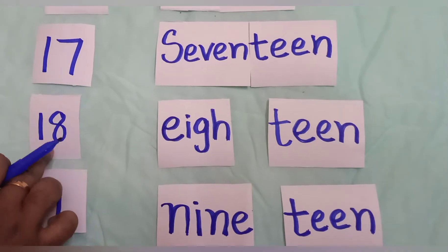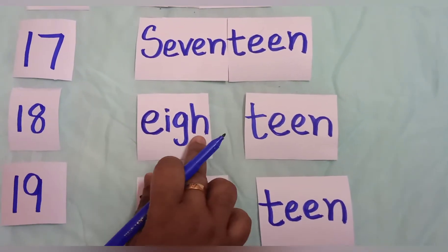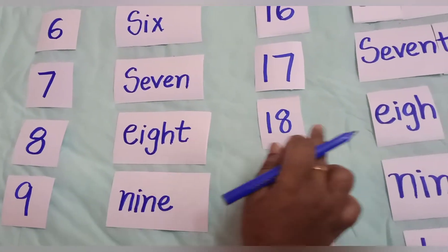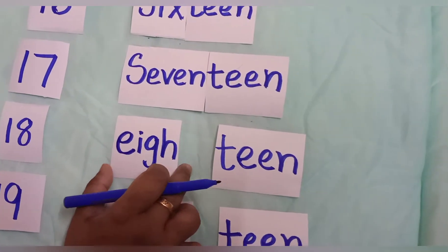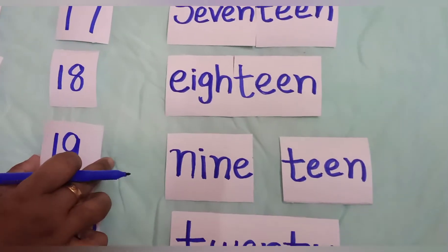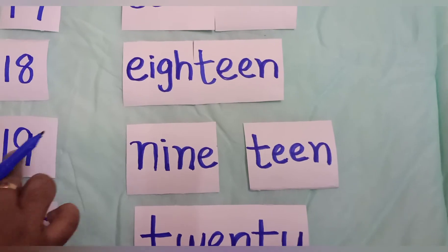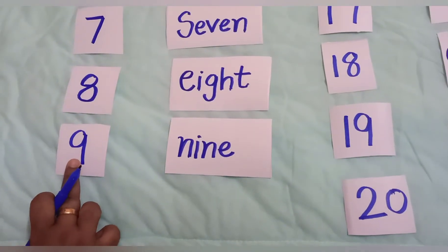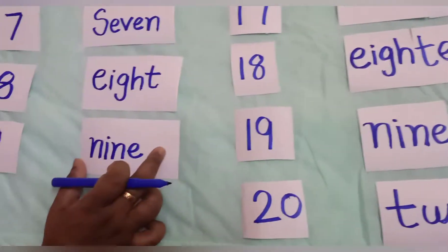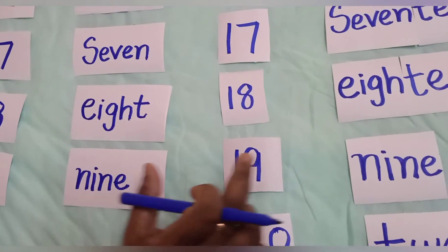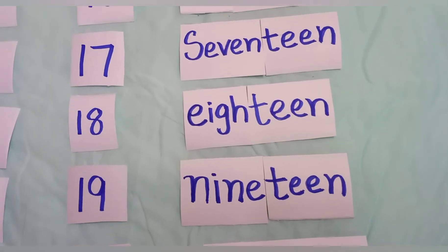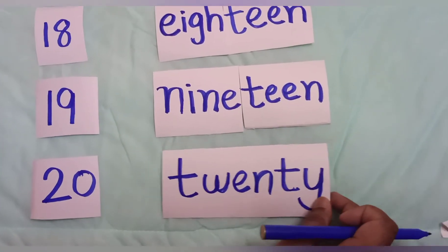Next one is 18. For 18, first write E-I-G-H-T, then join teen — T-E-E-N — to get eighteen. And then 19: you already know the spelling of 9 is N-I-N-E, so write that first and then join teen to get nineteen.